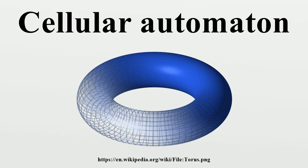Stephen Wolfram independently began working on cellular automata in mid-1981, considering how complex patterns seemed to form in nature in violation of the second law of thermodynamics, initially spurred by an interest in modeling neural networks. He published his first paper in Reviews of Modern Physics investigating elementary cellular automata in June 1983. The unexpected complexity of these simple rules led Wolfram to suspect that complexity in nature may be due to similar mechanisms. During this period Wolfram formulated the concepts of intrinsic randomness and computational irreducibility, and suggested that Rule 110 may be universal, a fact proved later by his research assistant Matthew Cook in the 1990s.